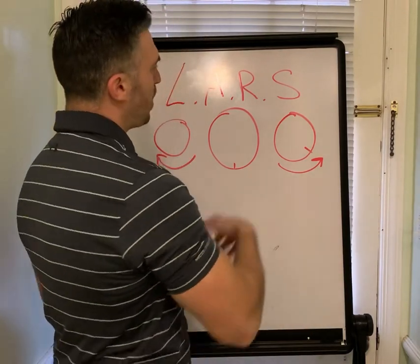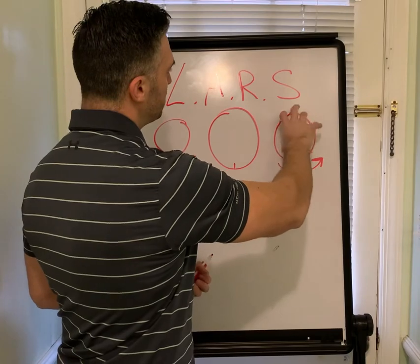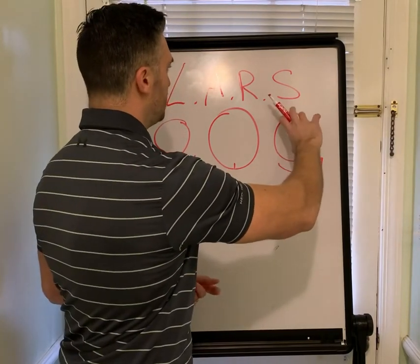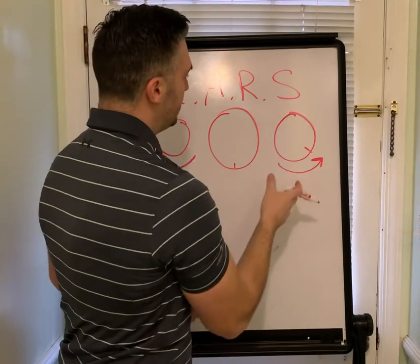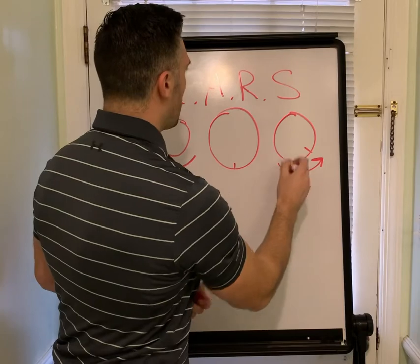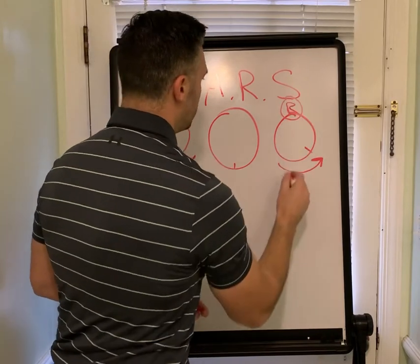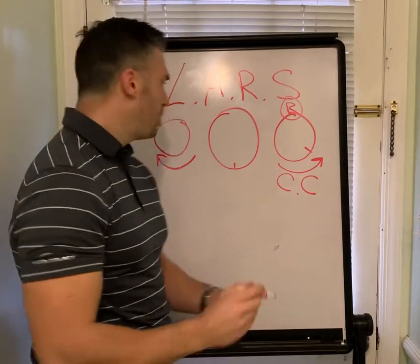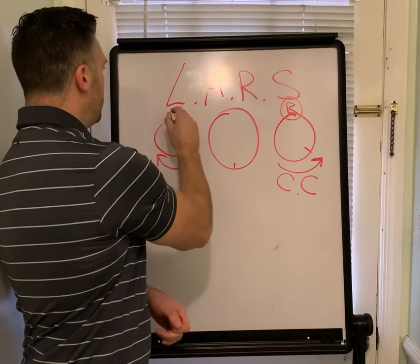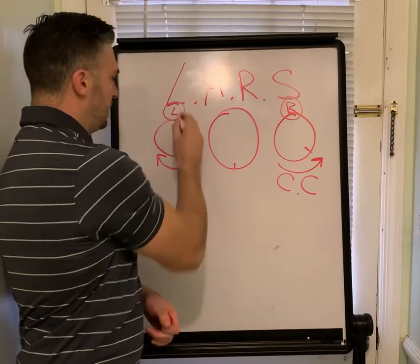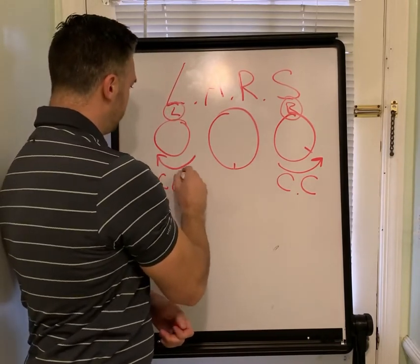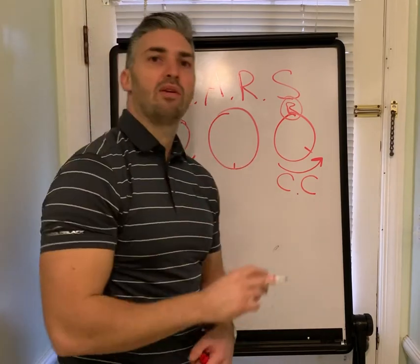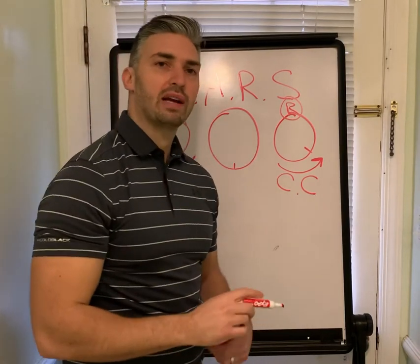When a lens rotates counterclockwise — so think of a clock going the opposite way — it is moving to the right. So remember that right is counterclockwise, and left is clockwise. Left we're adding and right we're subtracting.